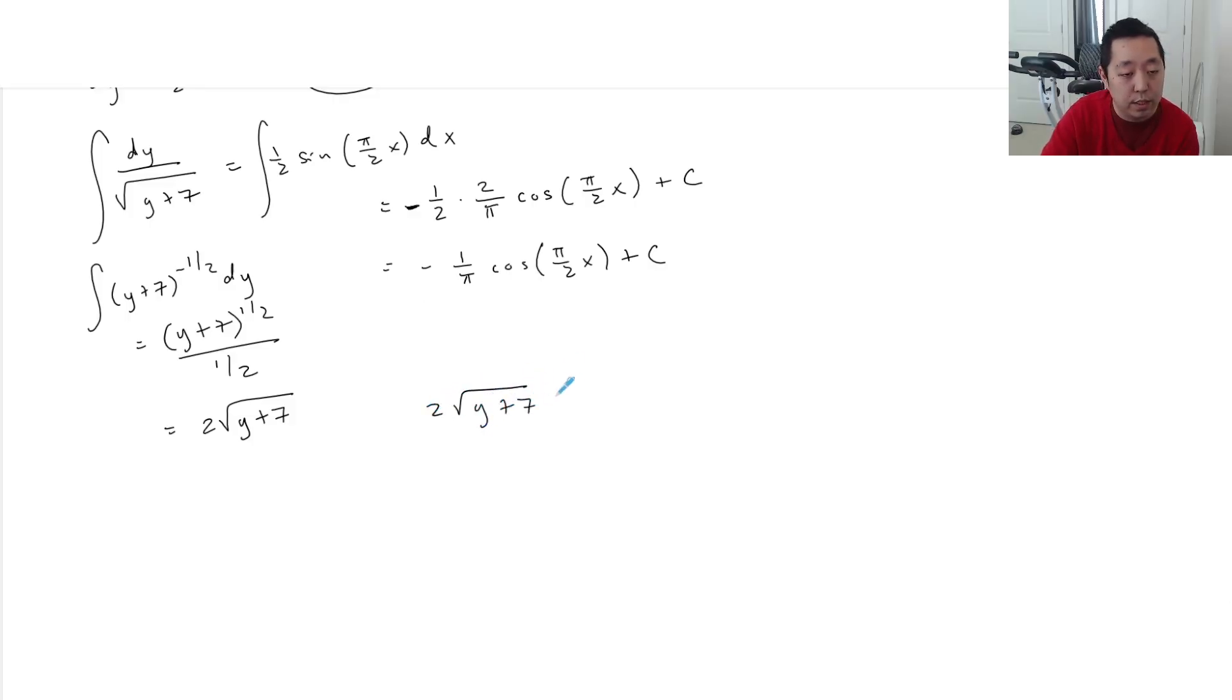So then we have this. We're going to divide by 2. c is an arbitrary constant. So when I divide that by 2, it's just whatever. And then I square both sides. Don't forget, I'm squaring the whole thing. So not just this guy, squaring the whole thing, and then I'm subtracting 7.